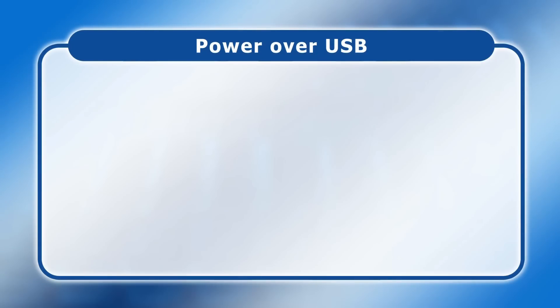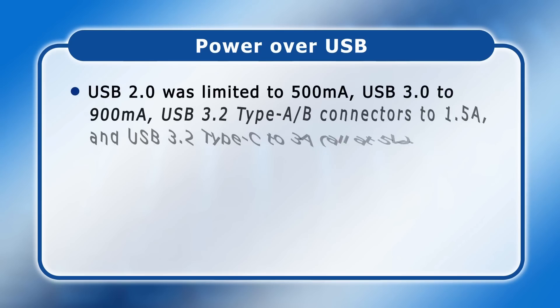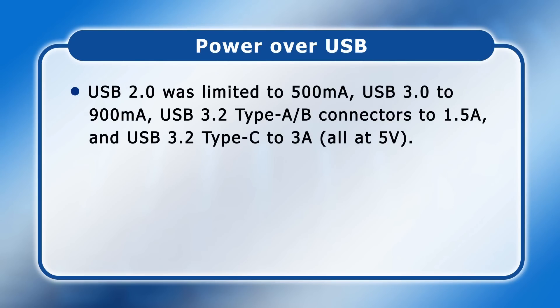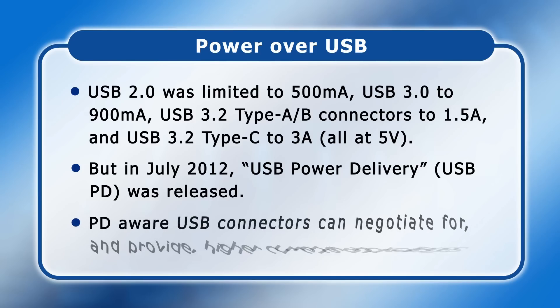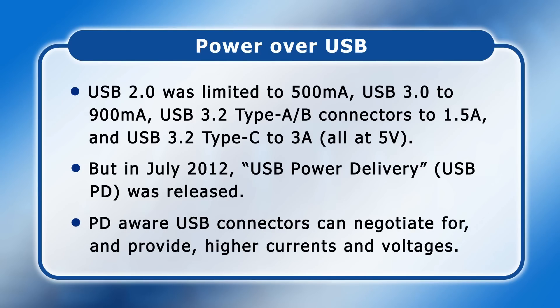Since version 1.0, USB connectors have been able to supply electrical power. Up until USB 2.0, output was limited to 500 milliamps at 5 volts, with the current increased to 900 milliamps for USB 3.0 and 1.5 amps for USB 3.2 over Type A or Type B connectors, or 3 amps using a Type C connector. In July 2012 an additional standard called USB Power Delivery, or USB PD, was released, allowing PD-aware USB connectors to negotiate for and provide higher currents and voltages.